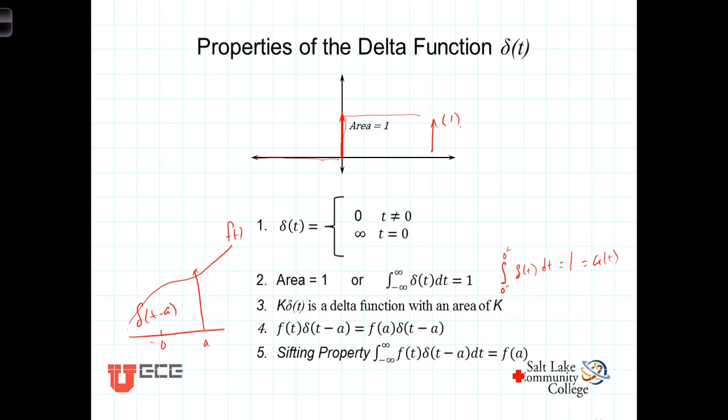This isn't a delta function of area f of a, because we've integrated over it, we've determined what that area is. Let's look at it a little bit more closely. Because this is only defined at t equals a, we can write this integral, then, as the integral from a minus to a plus, just both sides of a.